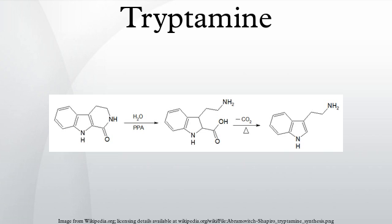The concentration of tryptamine in rat brains is about 3.5 pmol/g. Many plants contain small amounts of tryptamine, for example as a possible intermediate in one biosynthetic pathway to the plant hormone indole-3-acetic acid.